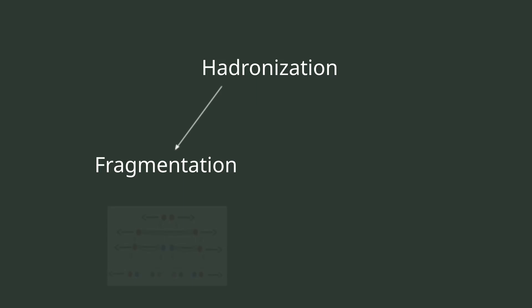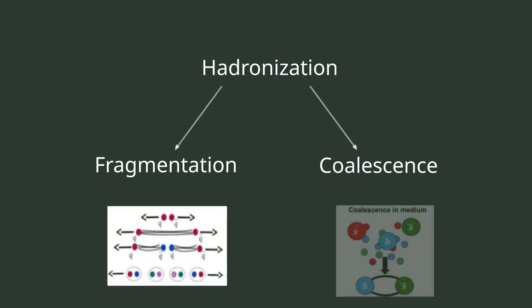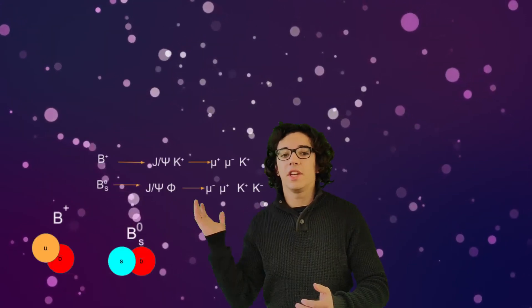The first being fragmentation, which is more likely to occur in high momentum regions, and coalescence, which is more likely to occur in lower momentum regions. In our work, we will be focusing our study on B mesons, specifically the B sub S and B plus mesons, on the following decay channels.